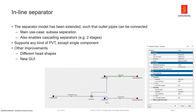In version 2.3 of LaterFlow we've extended the inline separator model. Previously it was only possible to have a separator tank at the end of a pipeline without any pipes connected to it. What we've done now is allow adding pipes to the outlets of the separator, so that you can simulate mainly subsea separation. We've made this completely general, so it's possible to do other scenarios like two-stage separation, which I'll show during the demonstration, and many other scenarios — it's completely flexible.